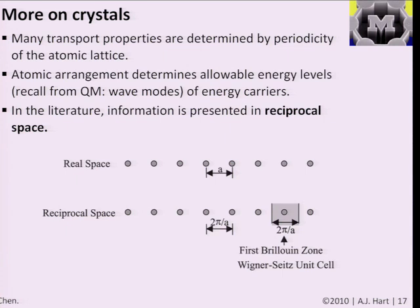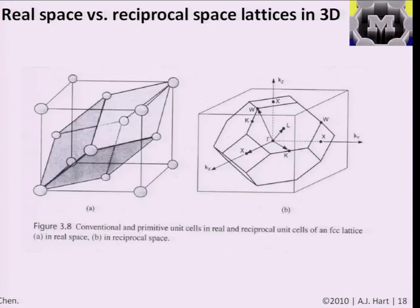A quick review: the main property of a crystal is that it's periodic, and a lot of transport properties are determined by that periodicity—everything inside the crystal depends on the spacing between atoms. In the literature, things are presented not in terms of the period of the atoms, but the reciprocal of the period. Part of this comes from how we look at crystals using X-ray diffraction, but more generally it's very convenient to look at things in Fourier transform space, where all periodic properties show up nicely. From quantum mechanics, 1 over the spacing—or 1 over the wavelength of a particle—is related to its momentum, so in a sense you're looking at momentum on one axis.